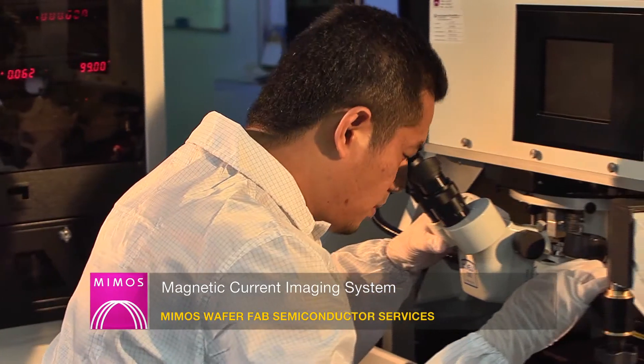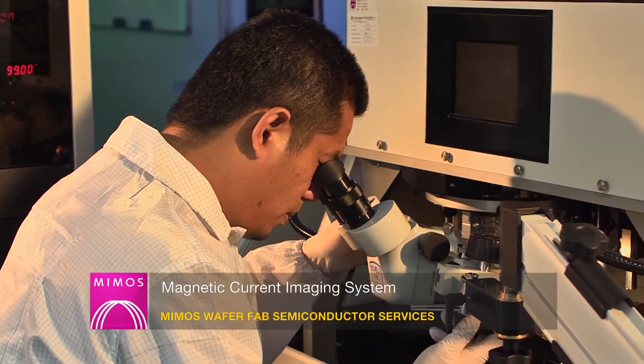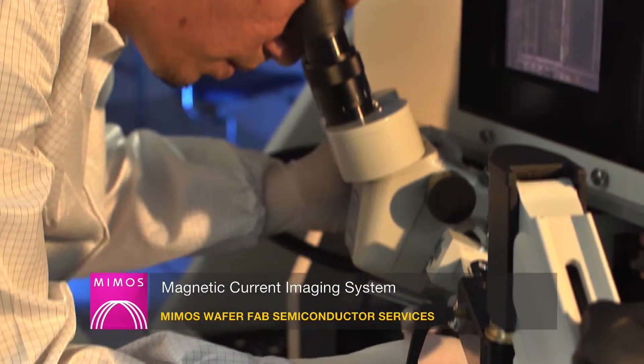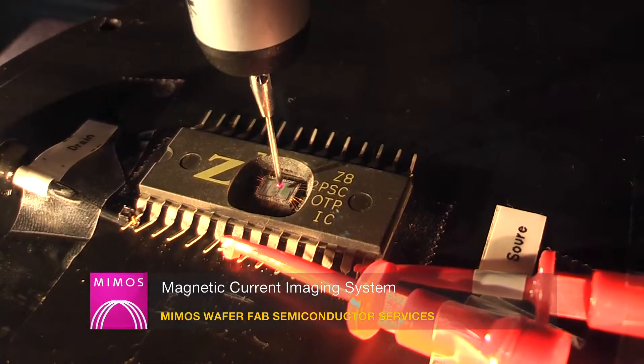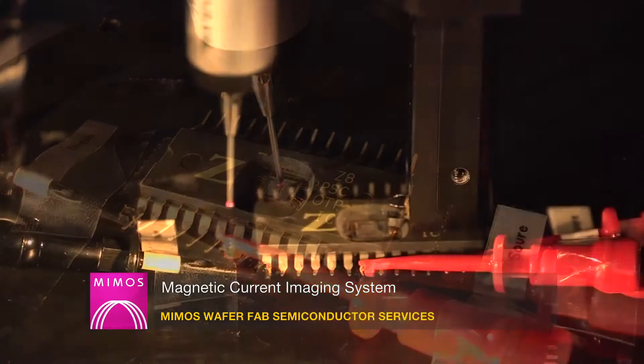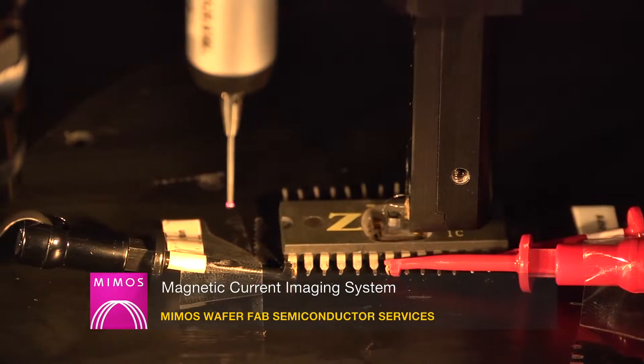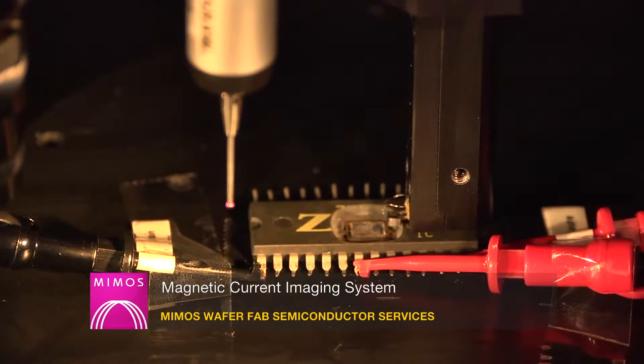Magnetic current imaging system is used to localize semiconductor failures through the measurement of weak magnetic fields. By mapping out the current flow in an IC or package, all types of short and conductive paths can be localized.